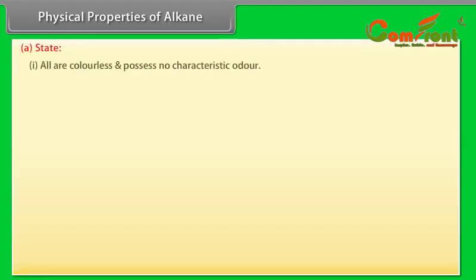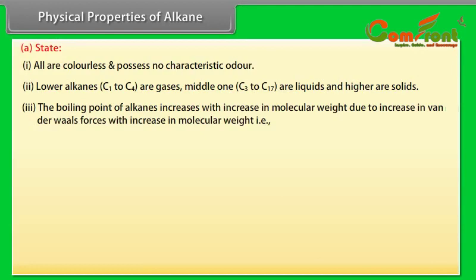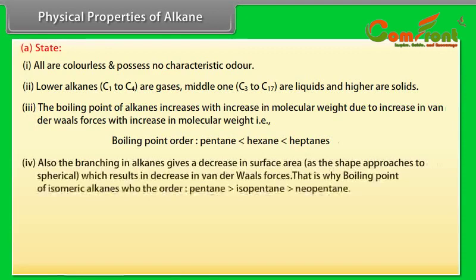Physical properties of alkanes — State: 1. All are colorless and possess no characteristic odor. 2. Lower alkanes C1 to C4 are gases, middle ones C5 to C17 are liquids, and higher are solids. 3. The boiling point of alkanes increases with increase in molecular weight due to increase in van der Waals forces. That is, boiling point order: pentane < hexane < heptane.